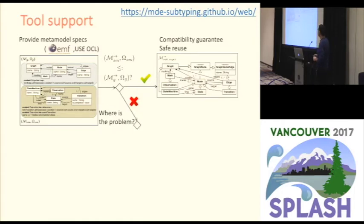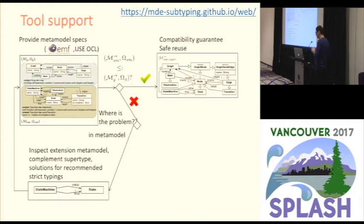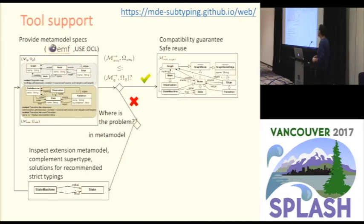If the predicate fails, our tool helps identify where the problem is. If the problem is in the metamodel, it generates the complement of the supertype and subtype metamodels along with the extension metamodel, and the user can inspect the complement supertype to see what concepts could not be covered by the inferred subtyping. That information can be used to analyze operations that need to be reused and to see what concepts need to be removed from the supertype metamodel.